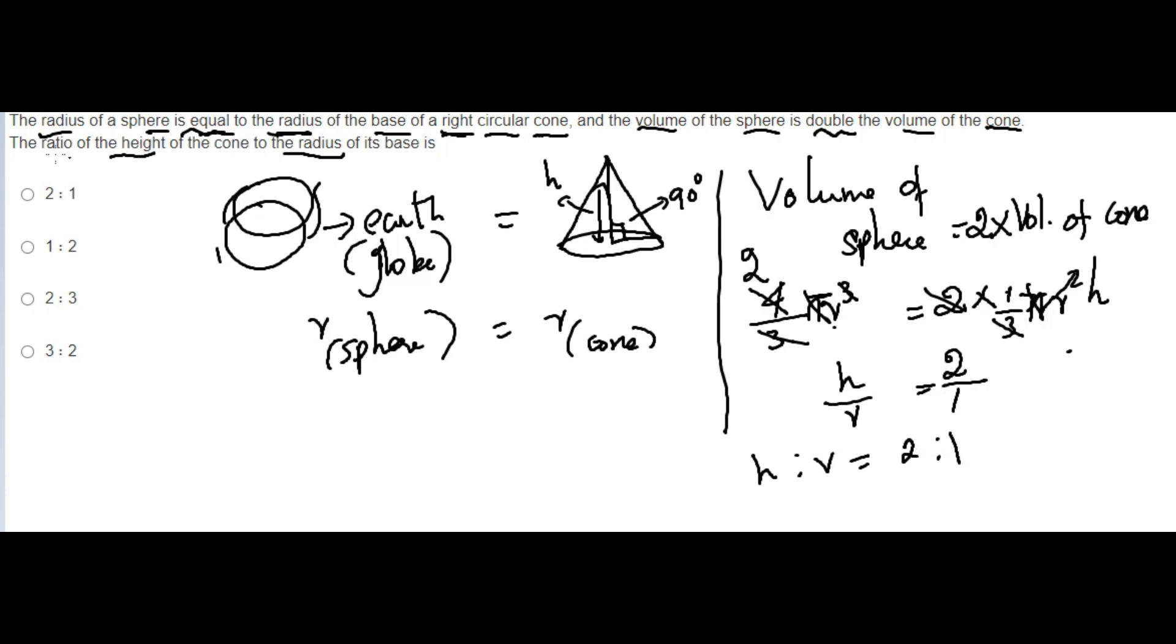So the ratio of height to r is 2:1. They've asked height to radius, so the ratio is 2:1. Take the first option. If you have any doubts, make a comment in the comment box. Thank you.